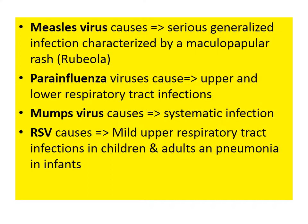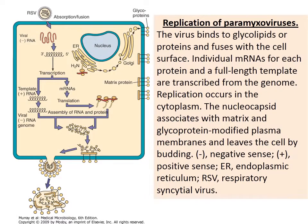The replication cycle will be familiar: attachment, penetration, uncoating, macromolecular synthesis, transcription, translation, assembly, and budding. For a respiratory virus with negative-sense RNA, after absorbing and fusing with the plasma membrane, all transcription and translation happen within the cytoplasm — as opposed to some viruses where this occurs in the nucleus.